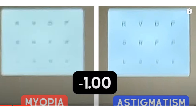Why correct astigmatism with toric IOLs? When you correct astigmatism with toric IOLs it always stays in the eye. With glasses, not every patient wears them the entire day — many patients go to the bathroom at night without their glasses and fall down. A toric IOL sits very close to the nodal point of the eye. Additionally, leaving astigmatism uncorrected can lead to asthenopia, a headache arising from the patient constantly trying to accommodate.